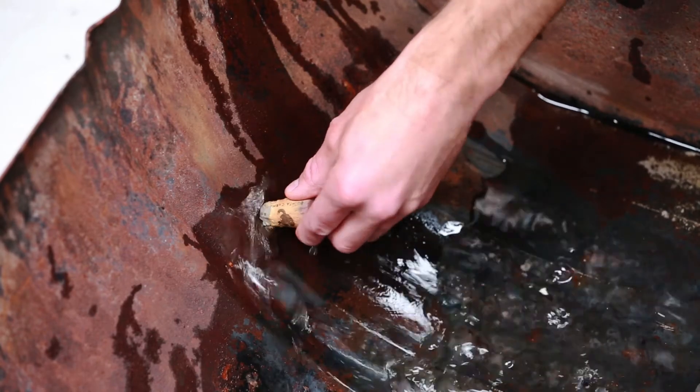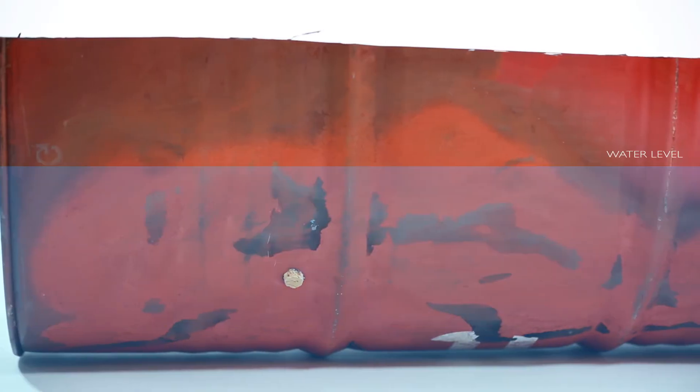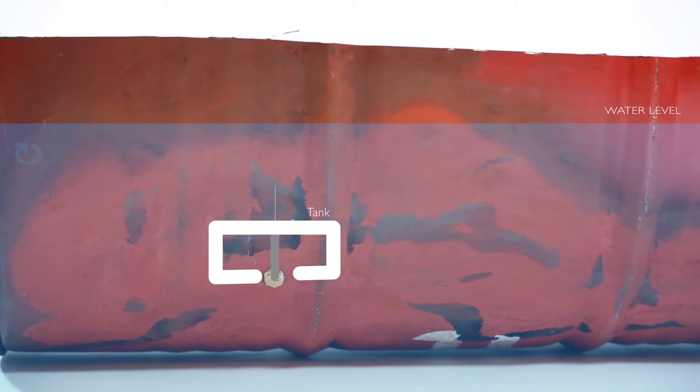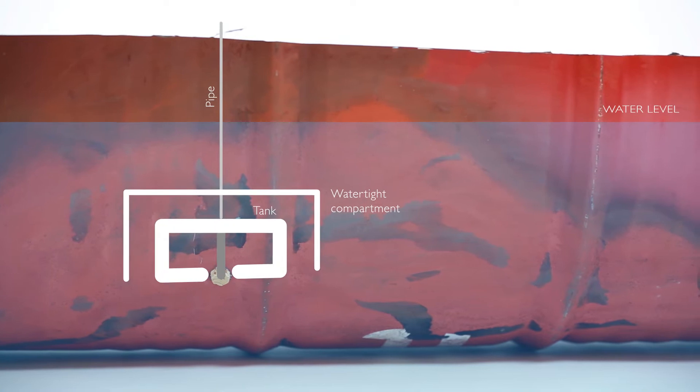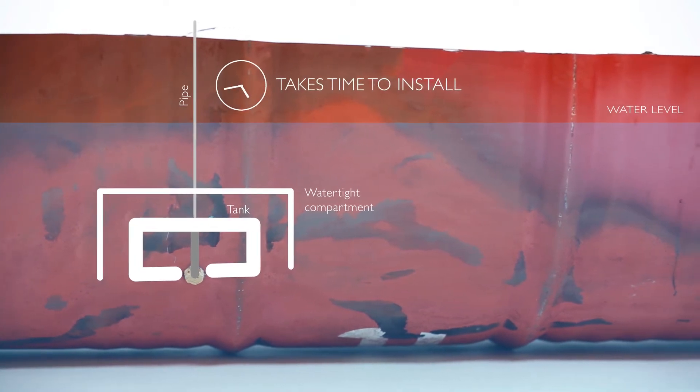OK, this is how it started. Speed logs are often installed in a tank with a pipe above sea water level. Sometimes the installation also includes a watertight compartment. Nothing wrong with that,